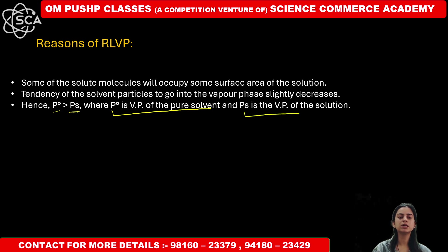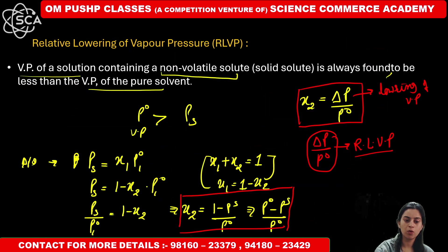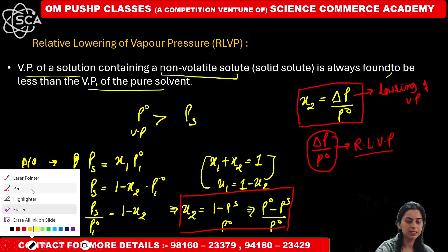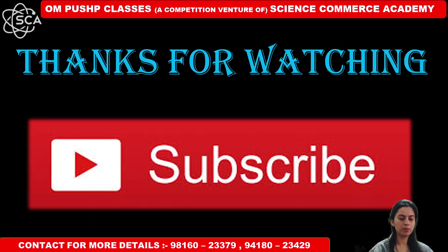P naught is the vapor pressure of your solvent and Ps is the vapor pressure of your solution. I hope you have understood this lecture on relative lowering of vapor pressure — how adding a solute decreases vapor pressure. Please note all the formulas I have boxed, as they are important and will be used frequently. Thanks for watching — please do like, share, comment, and subscribe.